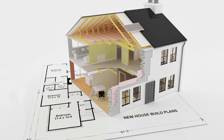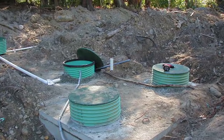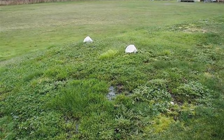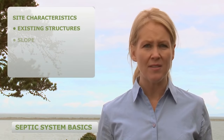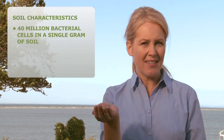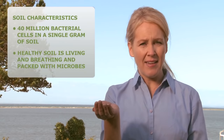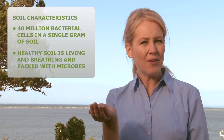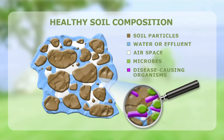When a septic system is designed, the designer and local government will base the size and type of the septic system on the number of bedrooms in the home and the physical features of the property. For design purposes, it is assumed that a bedroom can accommodate two people. If you have more people living in a house than the system was designed for, the system can become overloaded and fail. Site characteristics such as existing structures, slope, wells, streams, and other environmentally sensitive areas influence the system's design. Did you know there are typically 40 million bacterial cells in a single gram of soil? Healthy soil is living and breathing and jam-packed with microbes that break down pathogens — it's the key ingredient in treating wastewater from your septic system. Once it reaches the soil, pathogens from wastewater adhere to the soil particles and are broken down by microbes before it seeps into the groundwater. The type and amount of soil on a property is one of the most important things to consider in determining the design of a septic system.